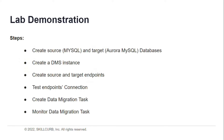The steps that will be followed are: first, we will create a DMS instance which is a replication instance. Then we will create source and target endpoints containing information about source and target databases. Then we will test the endpoints by checking the connection. Then we will create a data migration task that defines rules to migrate the on-premise MySQL database to AWS Aurora MySQL database. And finally we will monitor the migration task.